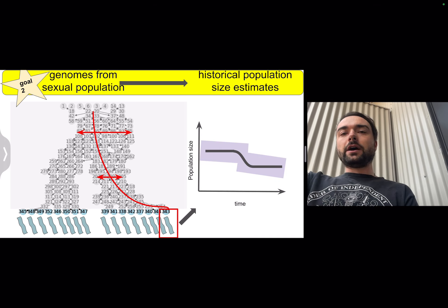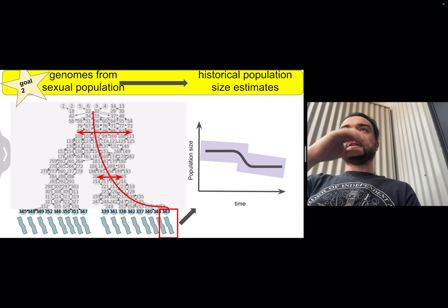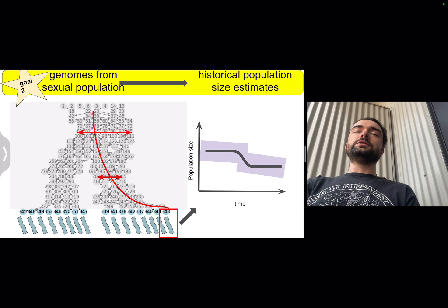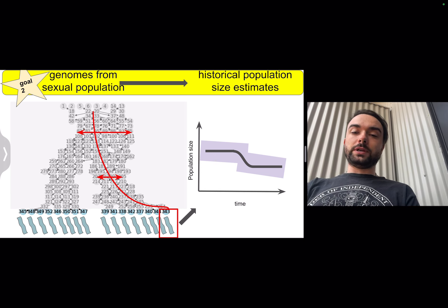So what we would want to do here is we want to be able to tell that the population size was relatively larger before the split, the speciation event, and then to be able to show that the population size decreased after that split in this particular example.